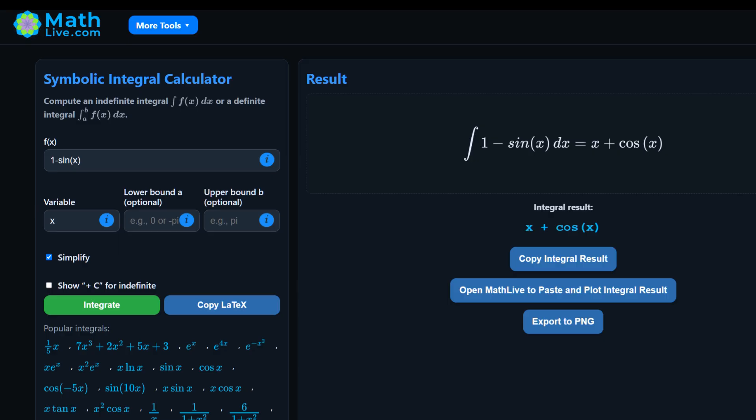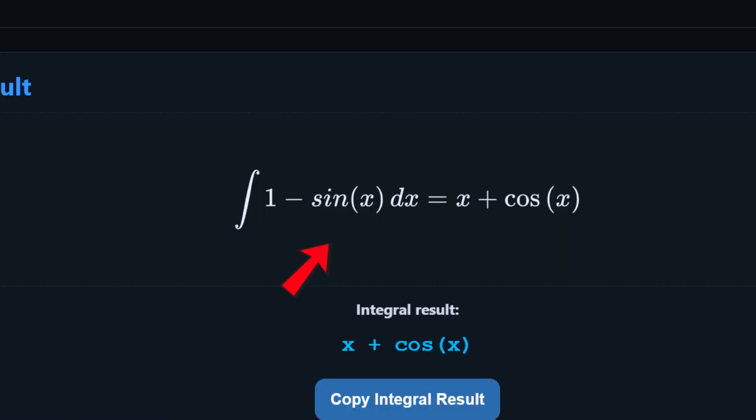Finally, let's verify it on mathlive.com using the integration module. We'll start by finding the indefinite integral, which serves to verify our hand calculations. As shown, the result of the integral is x plus cosine x, confirming our hand calculations.